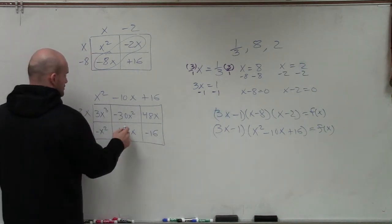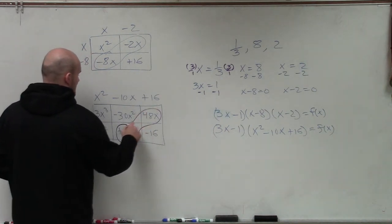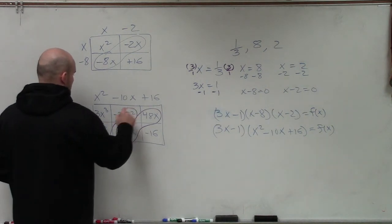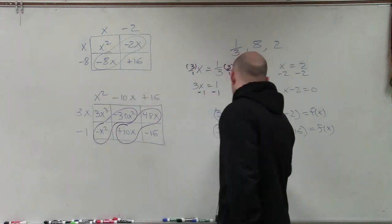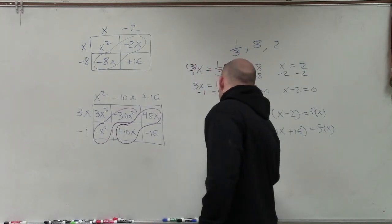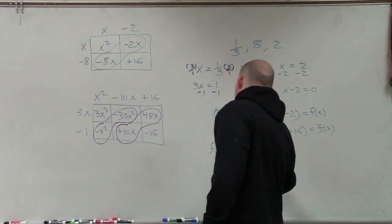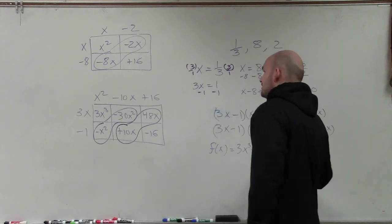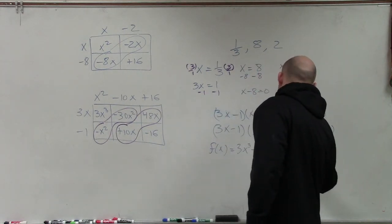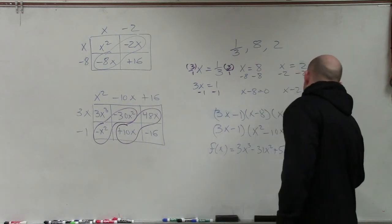Then again, I circle the terms that are going to have common factors so I can combine them. So therefore, my final answer here is going to be f of x equals 3x cubed minus 31x squared plus 58x minus 16.